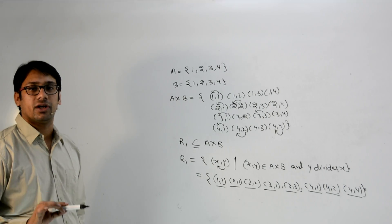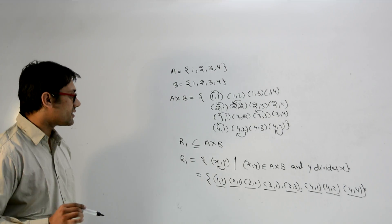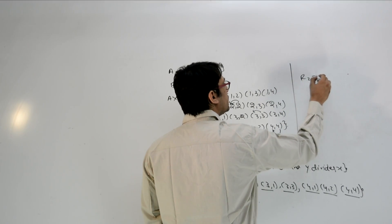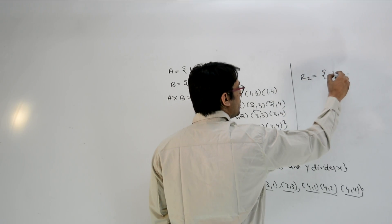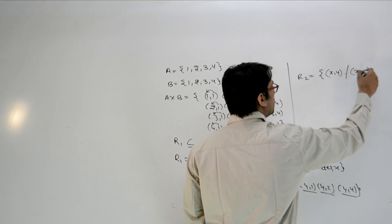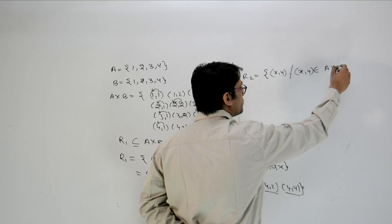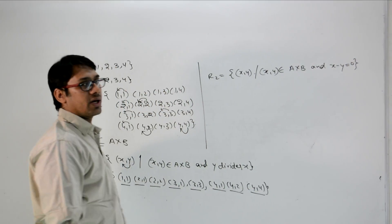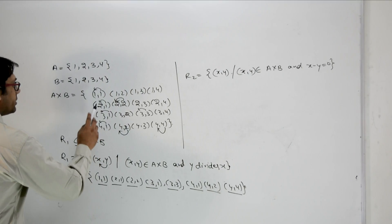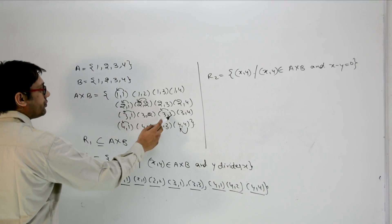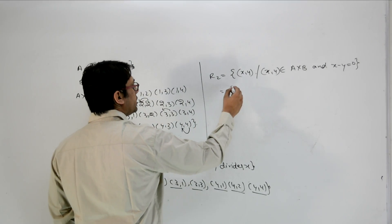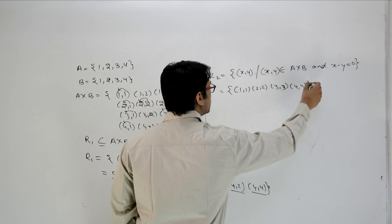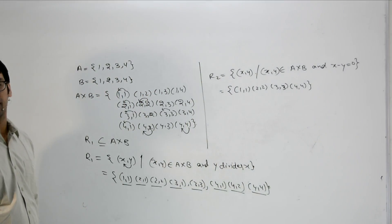We can also define a relation R2 over A cross B as the set of elements (X, Y) such that (X, Y) belongs to A cross B and X minus Y equals 0. The pairs satisfying this condition are (1,1), (2,2), (3,3), and (4,4).